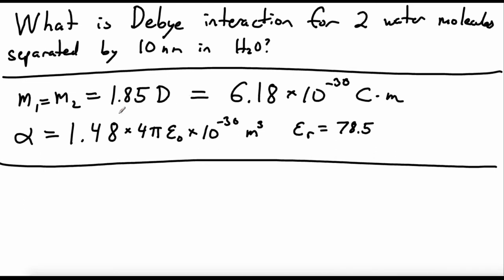And in the previous problem, we converted the 1.85 debye for the dipole moment of water to SI units. So we're ready to plug everything in. So because the two M1 squared alpha terms are the same for the first molecule inducing the second and the second molecule inducing the first, we'll just put in a factor of 2.